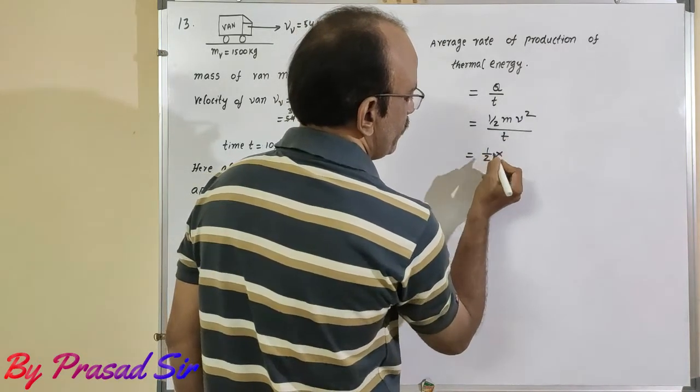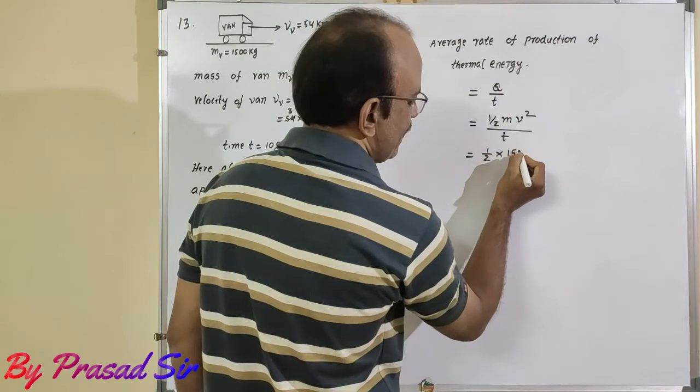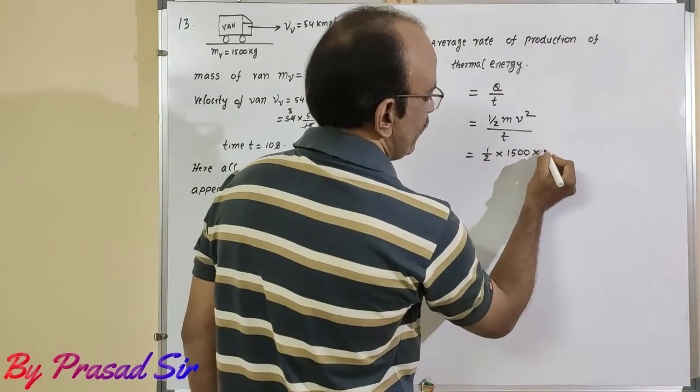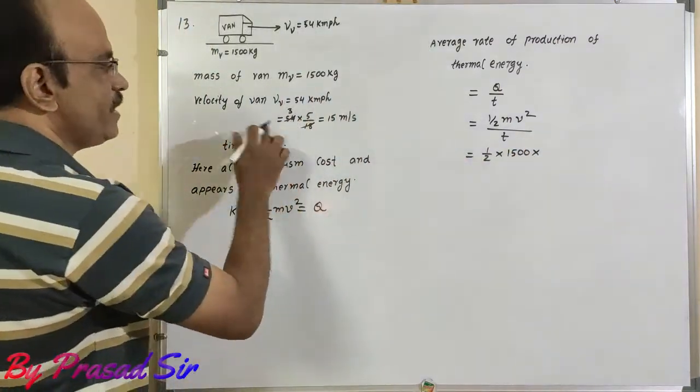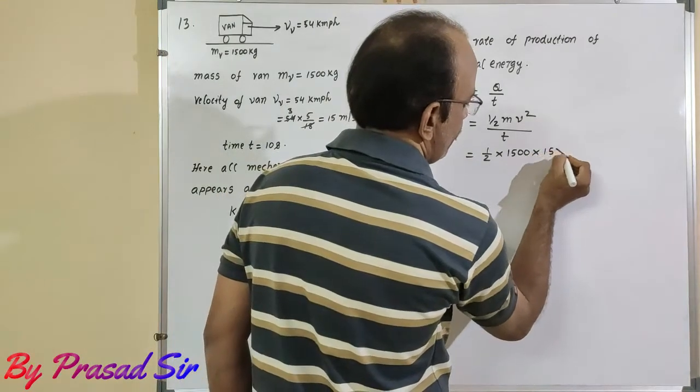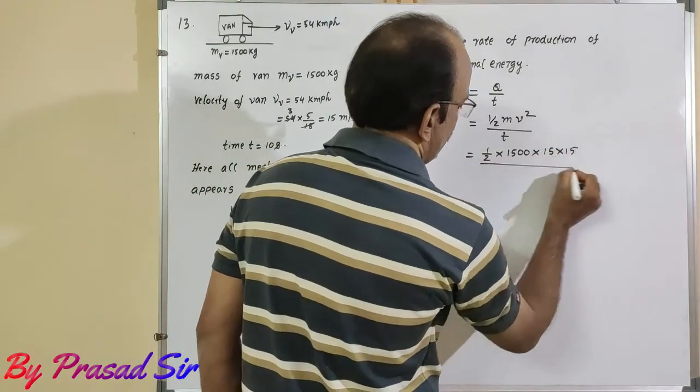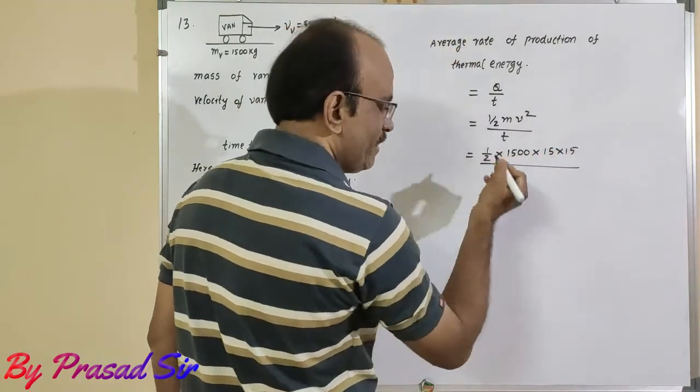So here, half m v square, m is 1500, velocity is 15 meters per second. 15 into 15 divided by time. How much? 10.